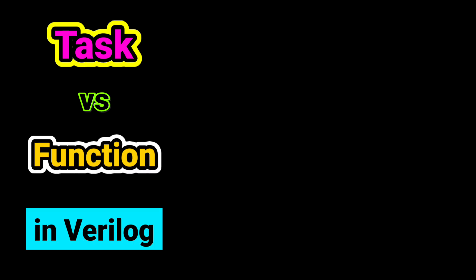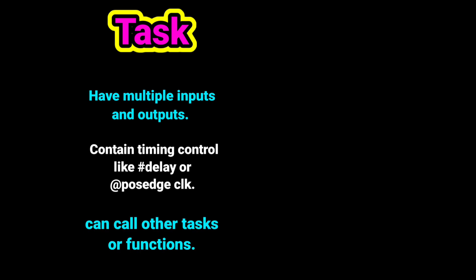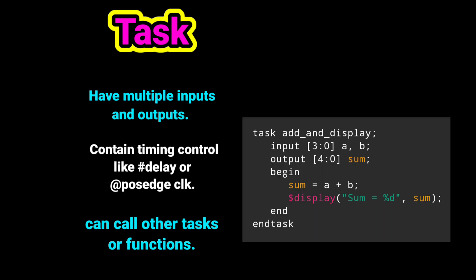In large designs, writing the same code repeatedly is inefficient. That's where tasks and functions come in. They let us divide the design into smaller reusable blocks, just like subroutines in C. The first one is task in Verilog. A task is like a mini program. It can have multiple inputs and outputs, contain timing control like hash delay or @(posedge clock), and can call other tasks or functions. Here the example is given in which task takes two inputs, calculates the sum, and displays it.